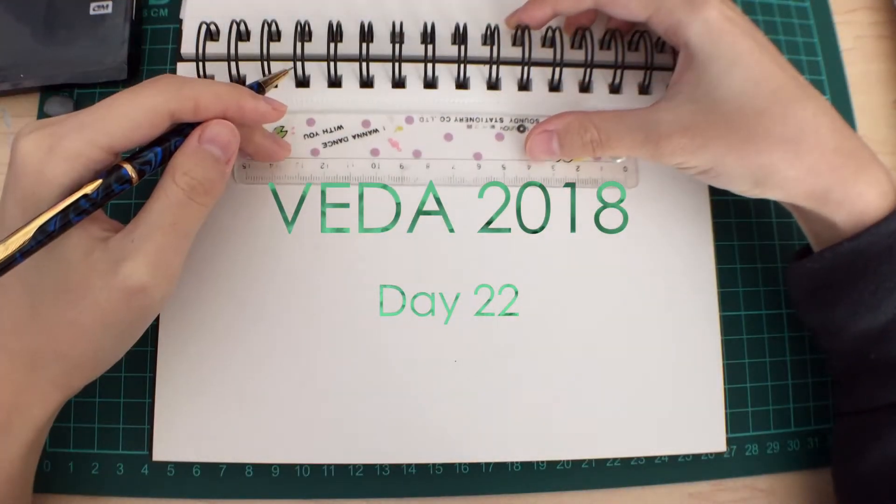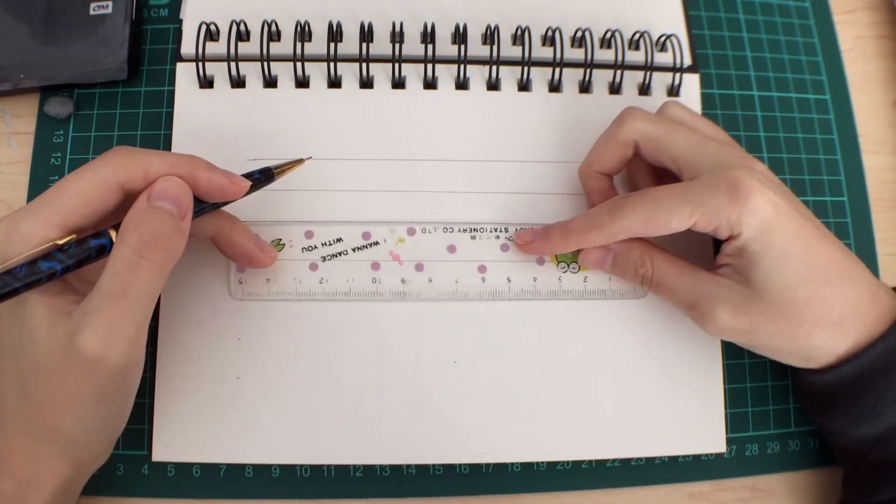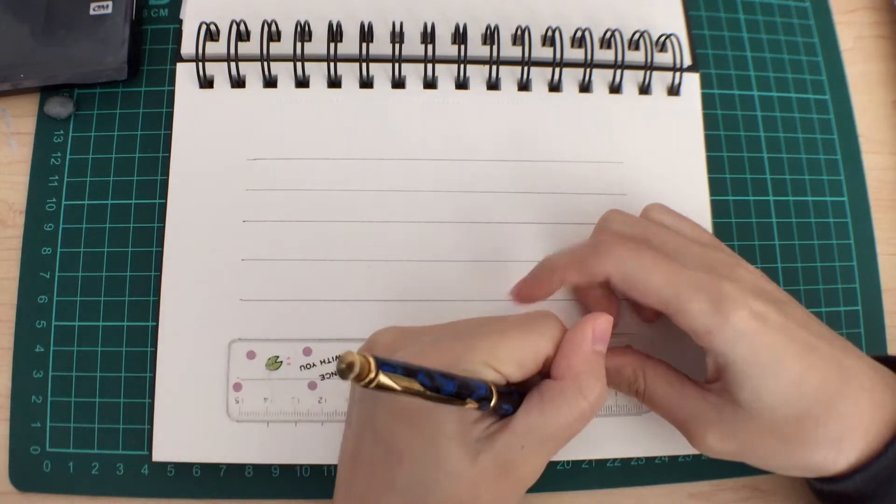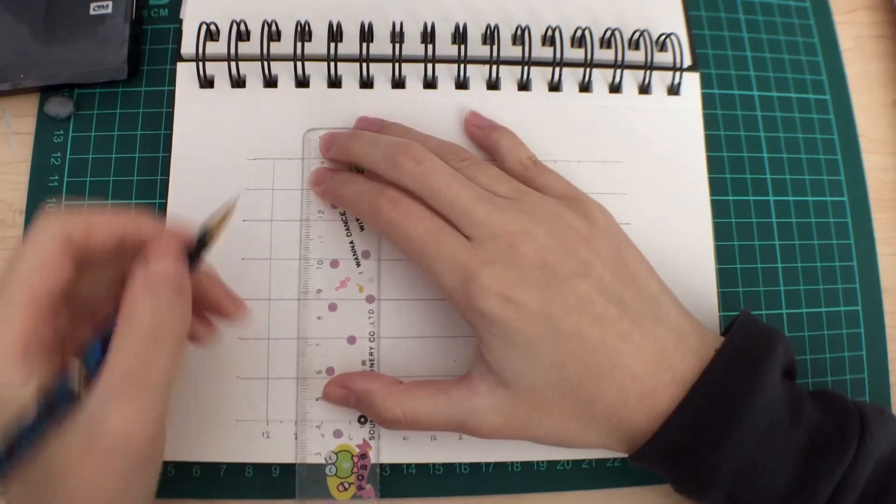I recently watched the Kurzgesagt remastered video on time, so I've been thinking a bit about how I spend my life, and I thought I'd draw you all a nice visual representation of how I spend a week.